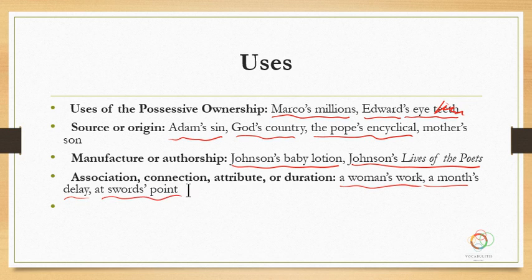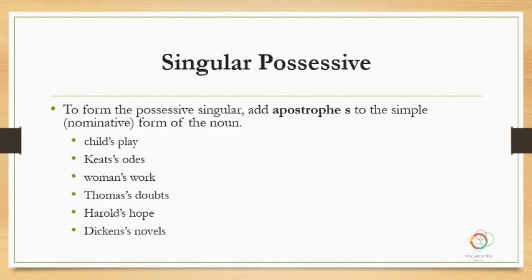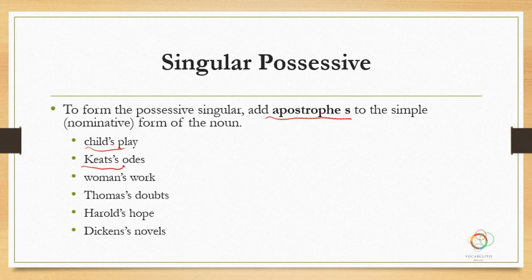All right, so just a lot of uses, but we don't really have to think of them in those terms. For the singular possessive, how do we use it? We just use an apostrophe S. So: child's play, Keats's, woman's work, Thomas's doubts, Harold's hope, Dickens's novels — apostrophe S.